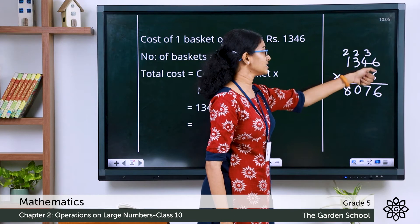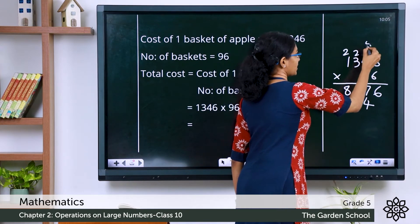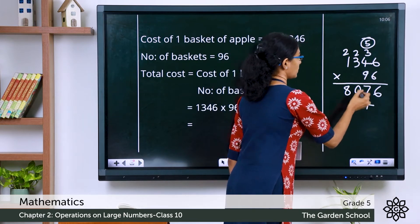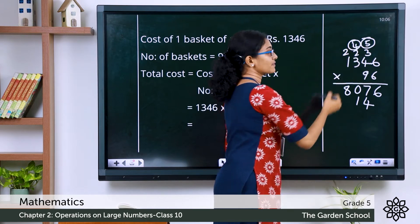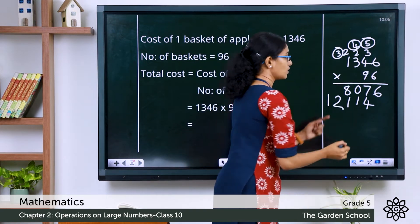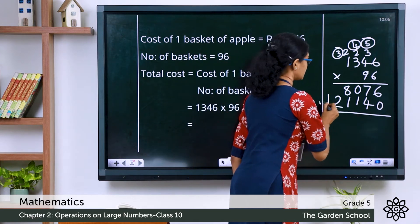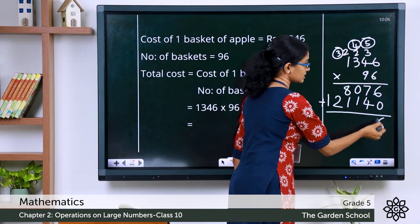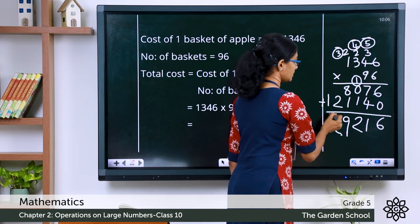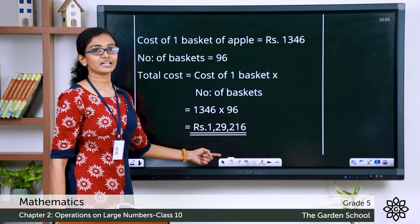Now multiply by the tens digit, 9: 9 × 6 = 54, write 4 carry over 5. 9 × 4 = 36, plus 4 = 40, write 1 carry over 4. 9 × 3 = 27, plus 4 = 31, write 1 carry over 3. 9 × 1 = 9, plus 3 = 12. Insert a zero as a placeholder for the tens place. Now add the two partial products: 6 + 0 = 6, 7 + 4 = 11 carry 1, giving us a running total, and continuing to get the final product.